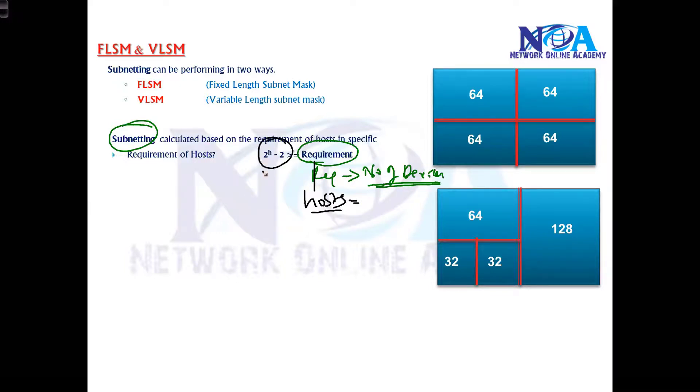Based on this formula, we have to calculate. We'll be using this formula: 2 to the power of h minus 2. That is the formula which we use for finding our exact requirement, or the exact subnet, or the exact small network we can divide.